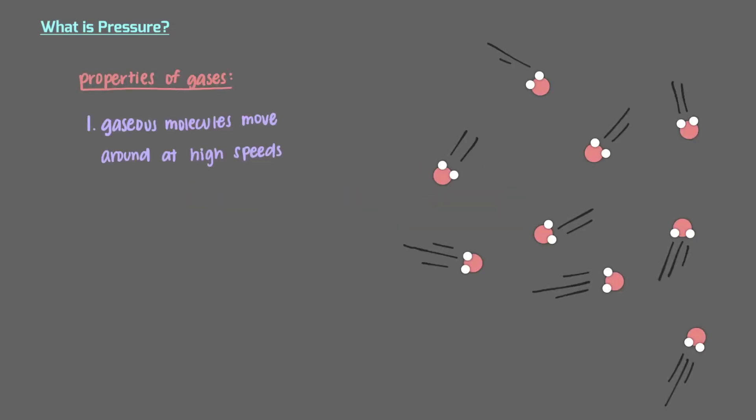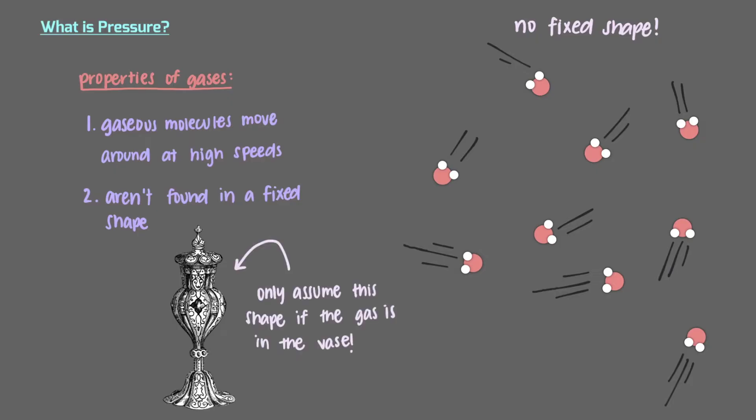Firstly, gaseous molecules move around at high speeds. Because they're able to move past each other easily, they aren't found in a fixed shape. This means that gaseous molecules assume the shape of the container they are in. For example, a gas won't be found in the shape of a crystal vase unless that gas is in that crystal vase.